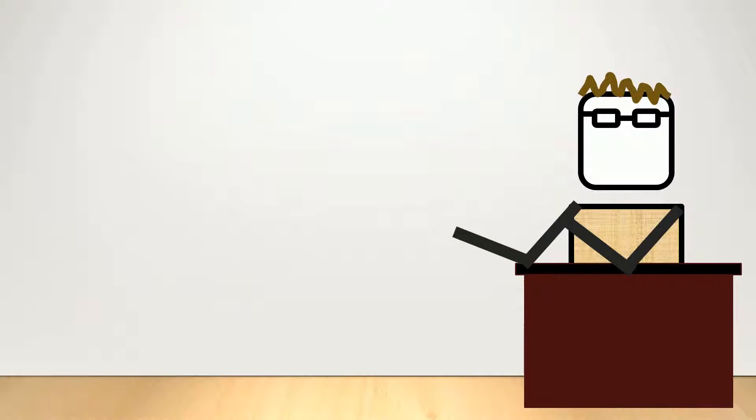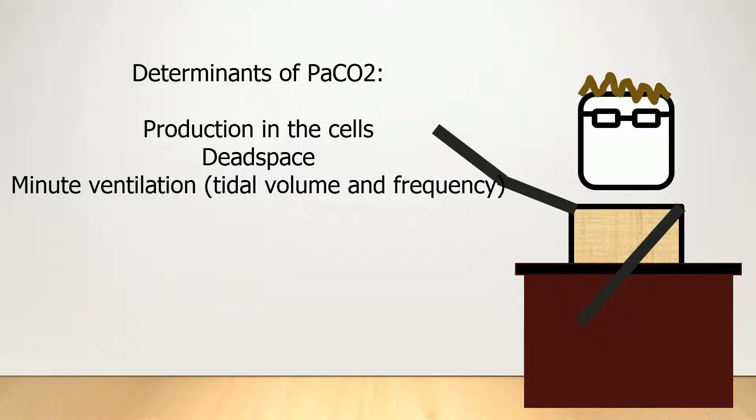Measuring the CO2 levels in the blood is really the best way to monitor ventilation. You will remember that removing carbon dioxide is the major job of the lungs, and there are several factors that contribute to carbon dioxide levels, namely CO2 production from the cells, the amount of dead space in the lungs, both physiological and anatomical, and minute ventilation. But in order to monitor CO2 levels in the blood, you need an arterial blood gas or an arterial line.